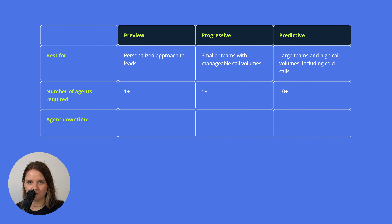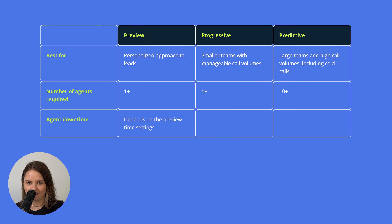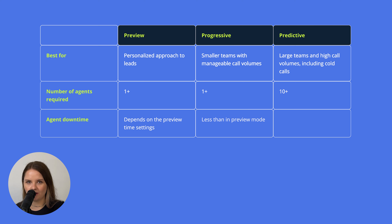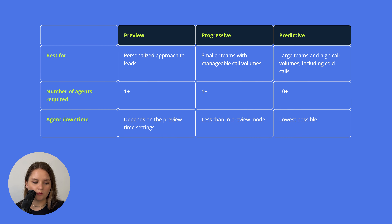Agent downtime: for the Preview mode, it depends on the preview time settings that you can set up in the dialer's settings. For Progressive, it's less than in Preview mode, as the system will immediately initiate a call if there is an agent available. And the Predictive dialer has the lowest possible agent downtime, as there is a high chance there is a contact waiting on the line already, so the agent has to immediately take the call.